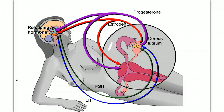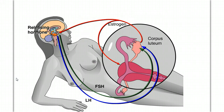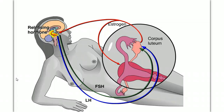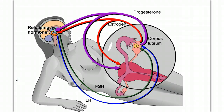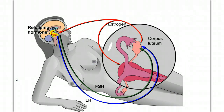What happens next depends on whether the ovum is fertilized or not. If the egg is not fertilized, the corpus luteum has a short lifespan. Suppression of LH after ovulation causes the corpus luteum to degenerate. As the corpus luteum's output of estrogen and progesterone drops, two changes occur: the lining of the uterus begins to slough off — beginning the menstrual period and start of the next cycle — and the drop in estrogen and progesterone reduces feedback inhibition, triggering secretion of FSH and LH, which stimulates the development of a new follicle.